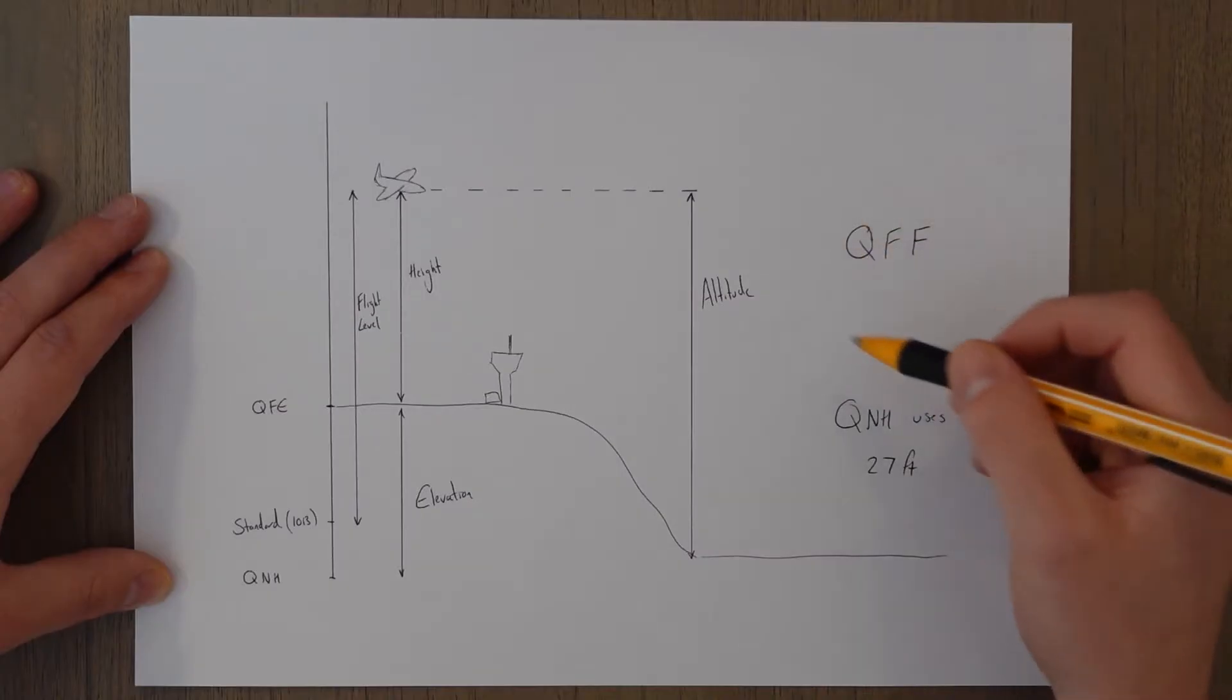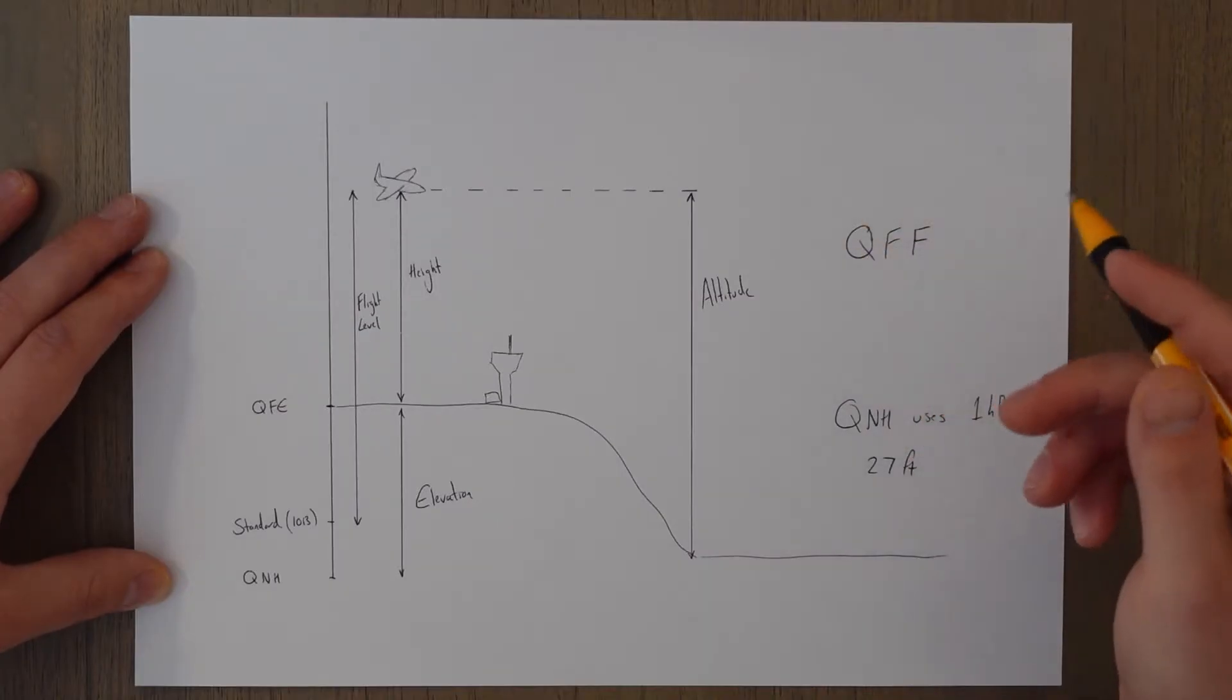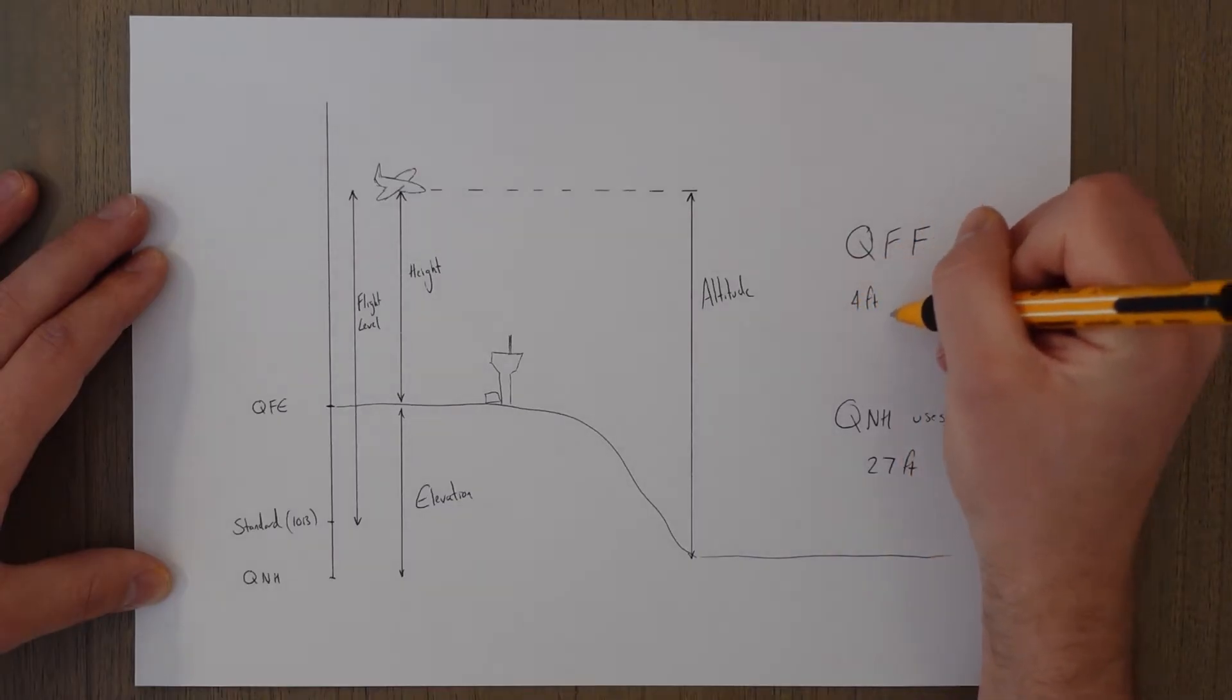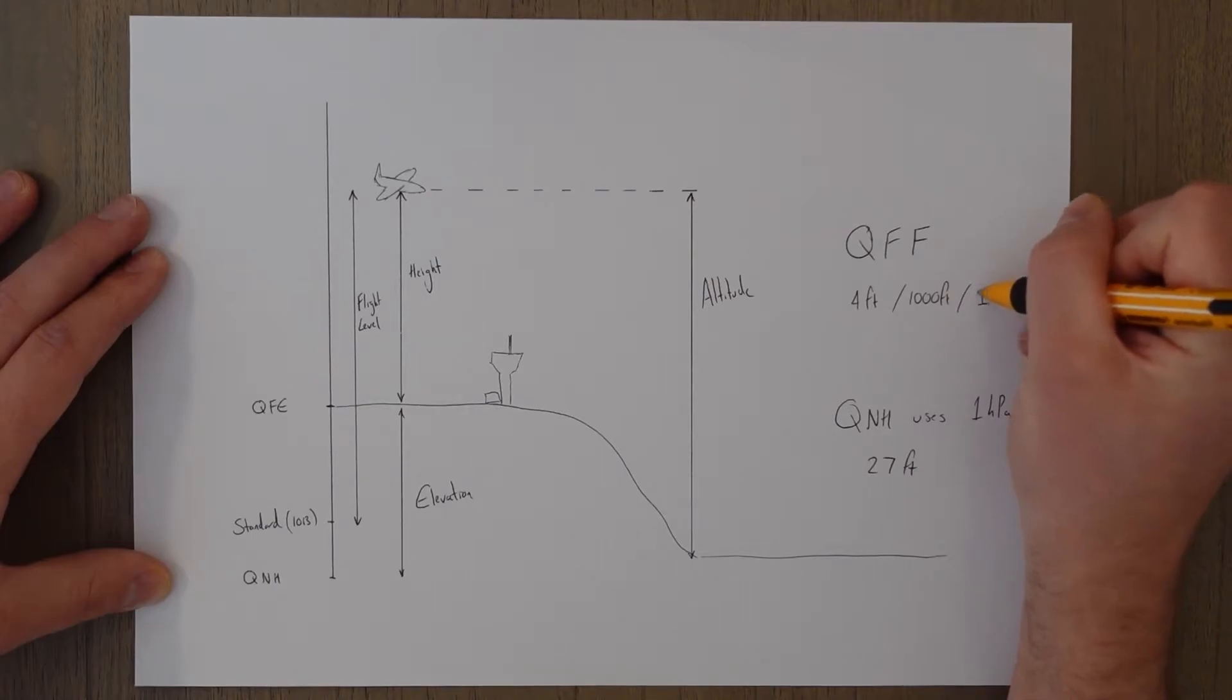So the QFF factors in this temperature correction, and the correction that we normally apply is four feet for every thousand feet for every degree of ISA deviation.